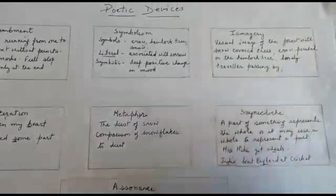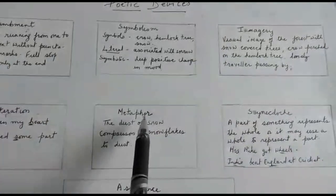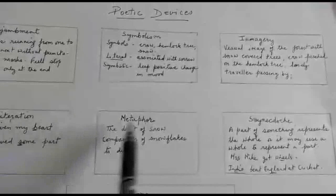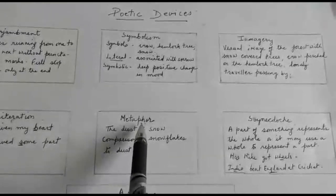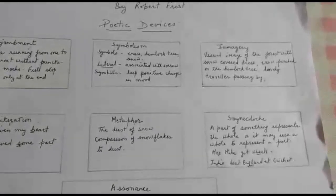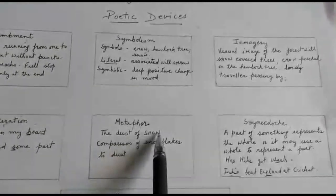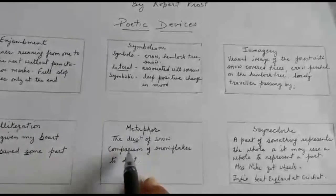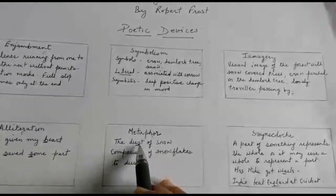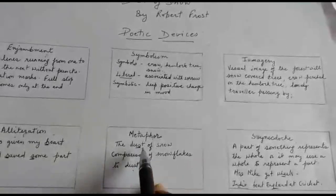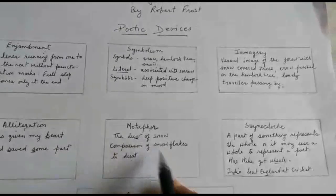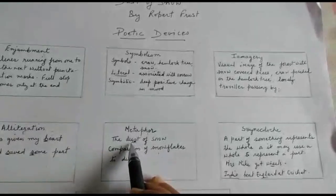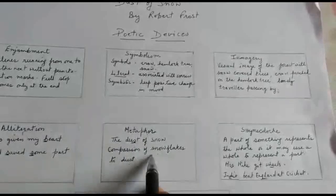We come to the next poetic device, that is metaphor. I'd explained metaphor to you earlier. Simile is a direct comparison of two distinctly different objects and metaphor is an indirect comparison. Now, 'the dust of snow' — here, dust is referring to snowflakes. So there is a comparison of snowflakes to dust. An indirect comparison of snowflakes is made to dust, and that is why it is a metaphor — it is an indirect comparison. The snowflakes are compared to dust; they are distinctly different objects and it is indirectly compared with no 'like' or 'as' in it. So this is metaphor.